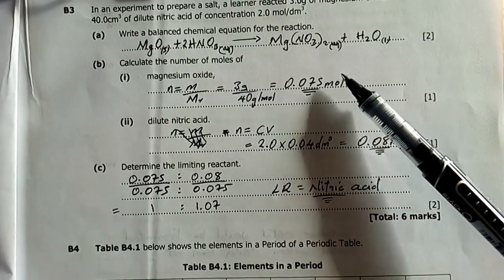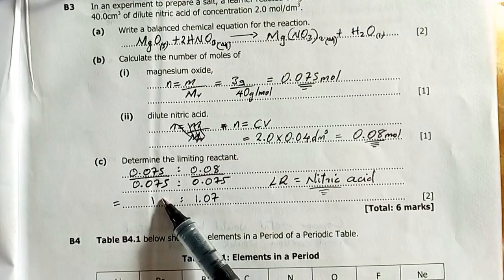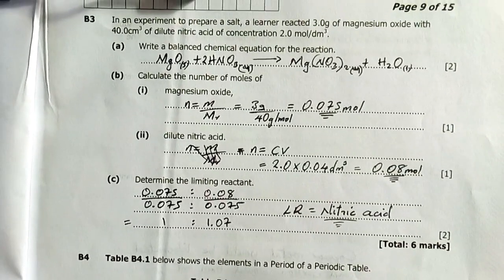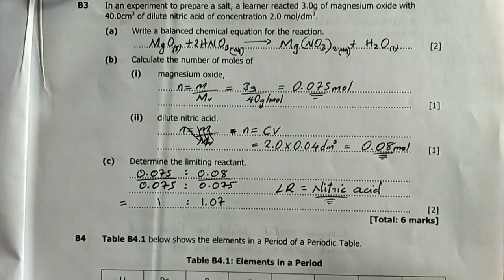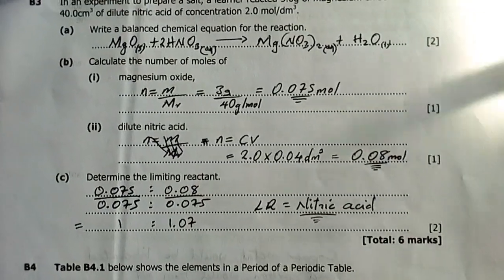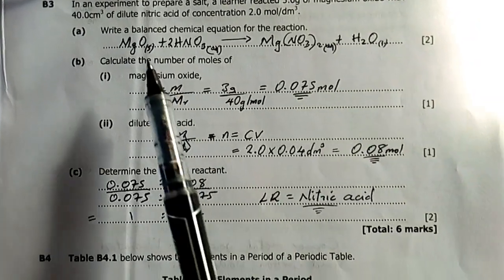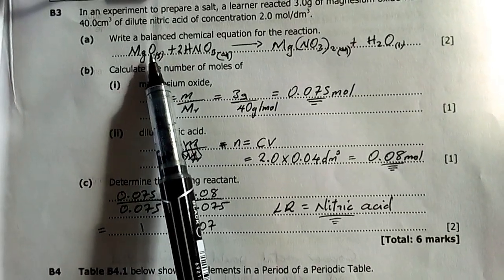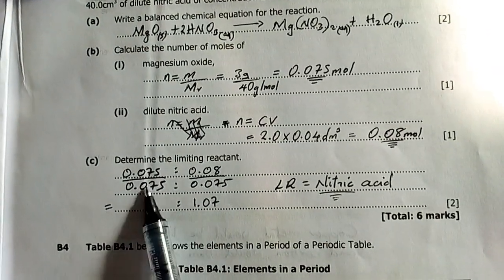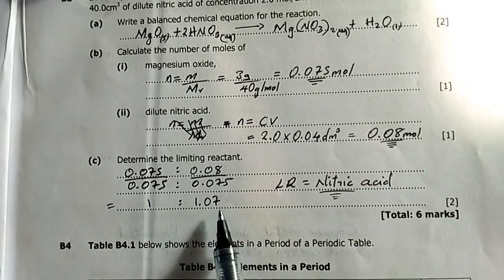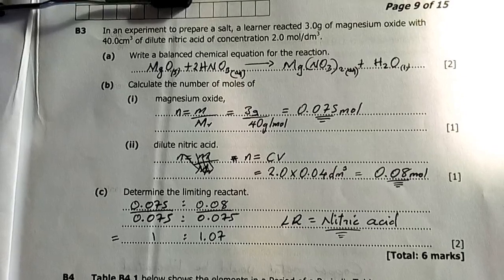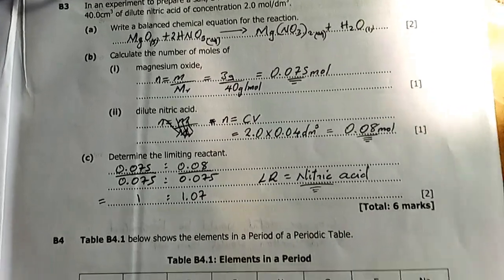Question C: Determine the limiting reagent. Divide the number of moles by the smallest. Our limiting reagent is the nitric acid. Looking at the balanced equation, one mole of magnesium oxide requires two moles of acid, but in our mole ratios, this is not twice that. Our limiting reagent is nitric acid. All six marks scored.